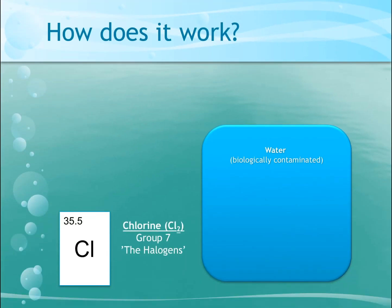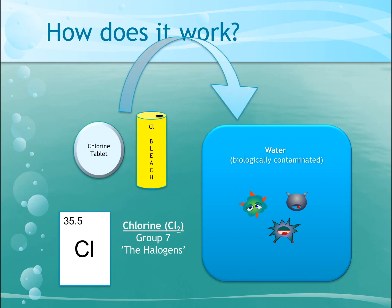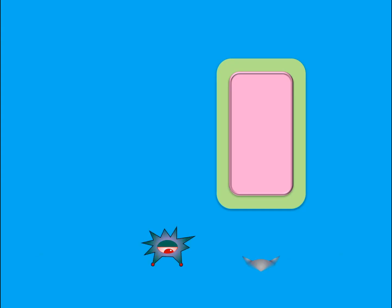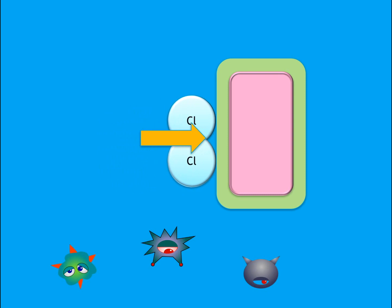Chemical disinfection works by adding chlorine bleach or chlorine tablets to the water. Chlorine is called a halogen element and is found in group 7 of the periodic table. Halogen elements, such as chlorine, are very frequently used in water disinfection because their chemical properties mean that they can break down the cell wall of a microbe, which then causes it to die.